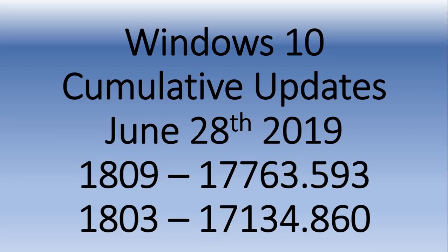The update was also released to fix the two versions previous to that — the Creators Update and Fall Creators Update — bringing their version numbers to 16299.1239 and 15063.1898. So if you apply this update, you'll be on 17763.593 in 1809, which is the October 2018 update. You'll be at 17134.860 in 1803, the April 2018 update.